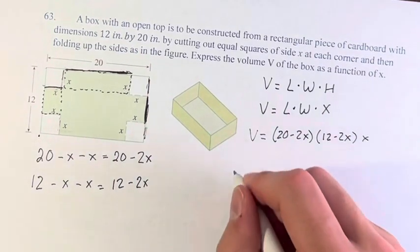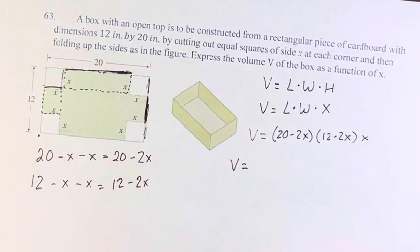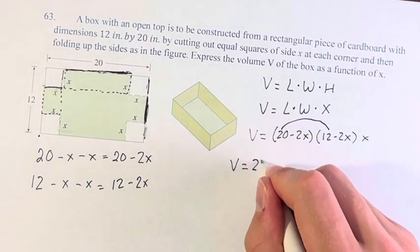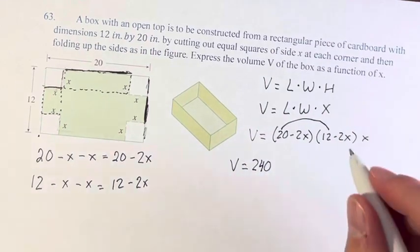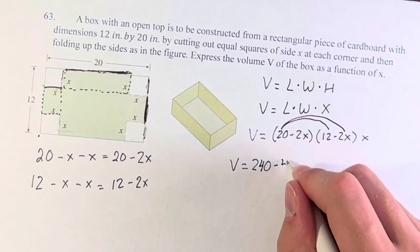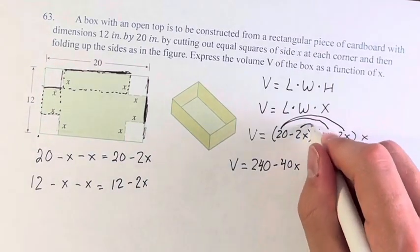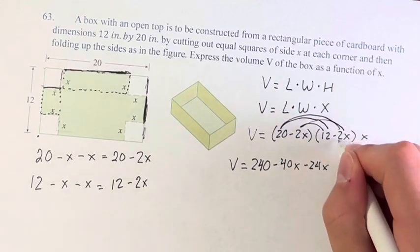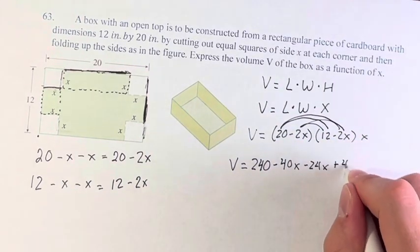We can just simplify this. Distributing, we have 20 times 12 equals 240. 20 times negative 2 is negative 40x. 12 times negative 2 is minus 24x. And then negative 2x times negative 2x is positive 4x squared.